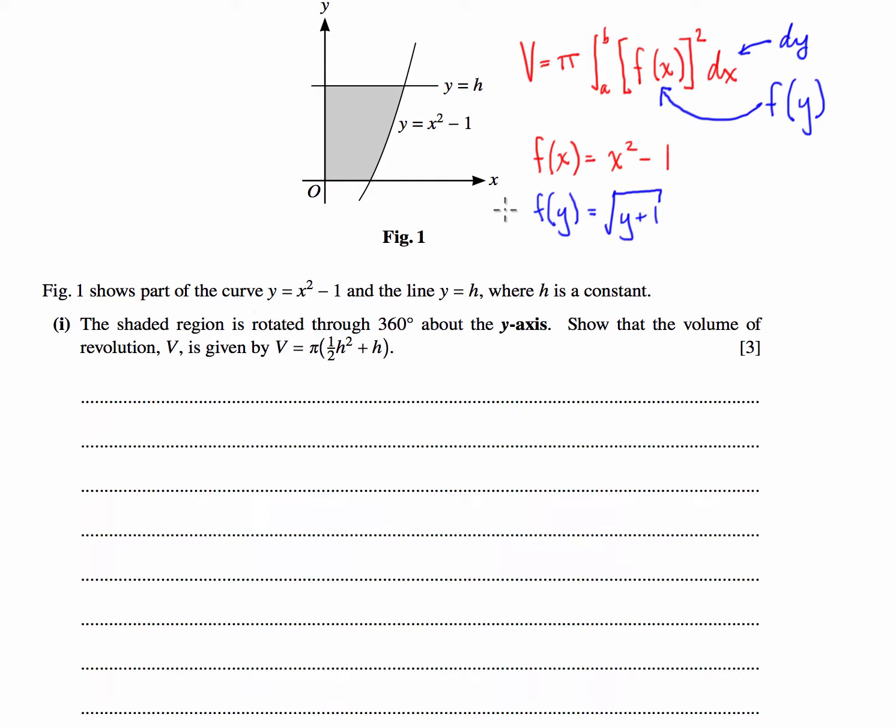So what I can do now is because I have my function in terms of y, I know what my boundaries of my integral are going to be. I know that the first one is going to be 0 because it's going to be y equals 0 here. And my second boundary is going to be h. So what I'm going to do is I can substitute this new function into my formula. So I'm going to have the volume of rotation is going to be equal to pi times the integral from 0 to h of the square root of y plus 1 squared dy.